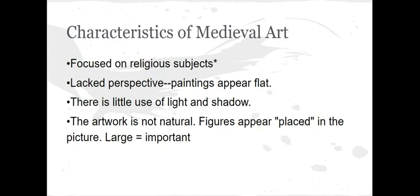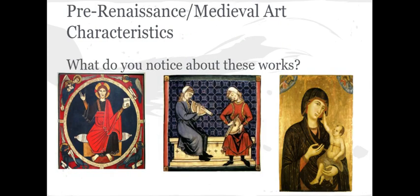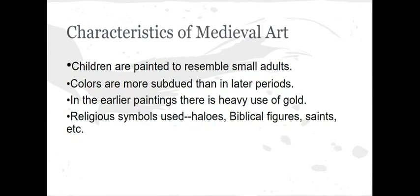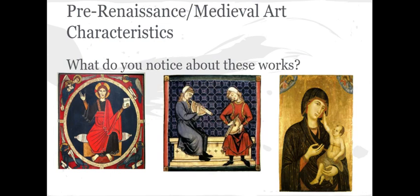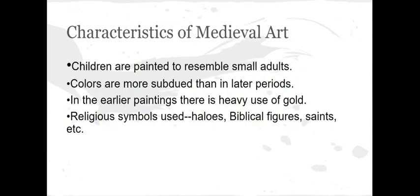Figures appear placed in the picture, and the larger they are, the more important they are. People look a little larger than life, unnatural, almost like mannequins — as if someone has posed them in the picture. Children are painted to resemble small adults. Looking at these pictures, the baby that is in the picture is supposed to represent Jesus, so Mary is holding him, but in pre-Renaissance art children look like small adults. Colors are more subdued, there is a heavy use of gold, and religious symbols and biblical figures are used frequently.